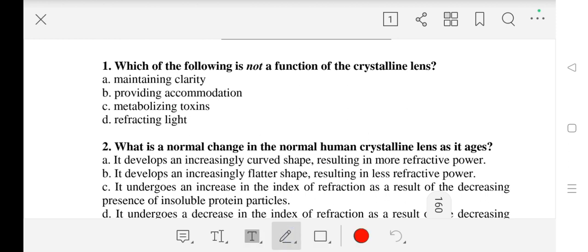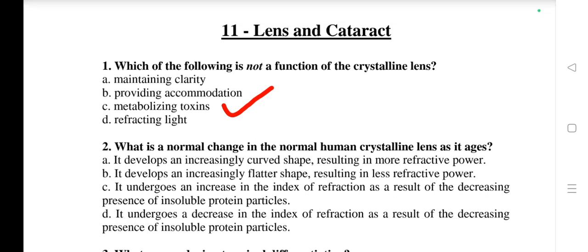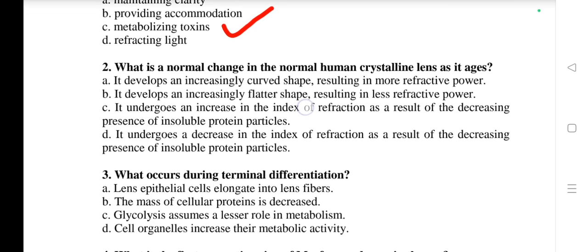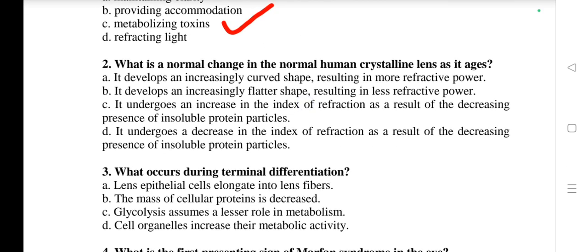Question number 2: What is a normal change in the normal human crystalline lens as it ages? The answer is A - it develops an increasingly curved shape, resulting in more refractive power.